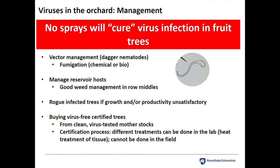The only ways to avoid viruses: number one, vector management — the dagger nematodes are most problematic for us, since tomato ringspot virus is transmitted by dagger nematodes only. Also manage the reservoir hosts for tomato ringspot virus, which are weeds. Dagger nematodes will feed on those weeds in your row middles and then move to your trees. So you need good nematode management, preferably before planting — whether through biofumigation using green manure like sorghum sudangrass or rapeseed, or through chemical fumigation. Rogue infected trees if growth is subpar, and buy virus-certified trees from reputable sources.